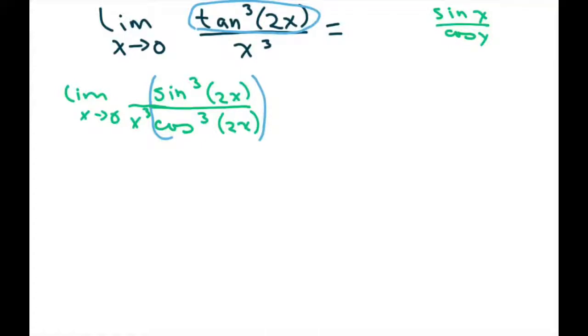Now we're going to break this down in fraction form. The limit as x approaches 0, I'm going to write sine cubed of 2x divided by x cubed, and then multiply this by 1 divided by cosine cubed of 2x. So I just kind of broke it out. You can multiply it through and come back to the same here.